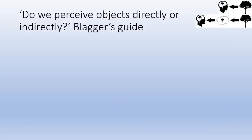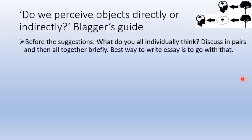What do you do if the perception essay comes up? I think it's unlikely but not impossible. If it does come up, it's probably going to be phrased in terms of direct realism because it's been phrased in terms of indirect realism before. You might get something like: do we perceive objects directly? My guess is it will just talk about the directness. So for 25 marks, what do you do?